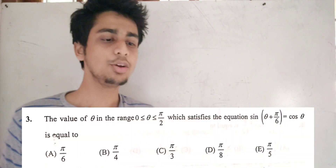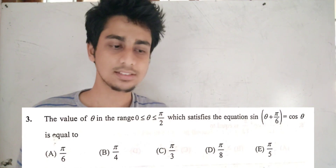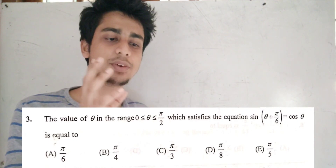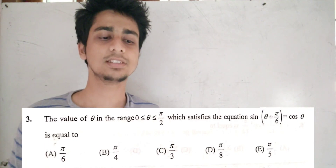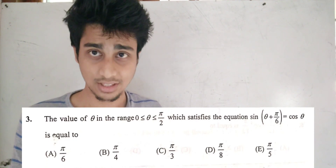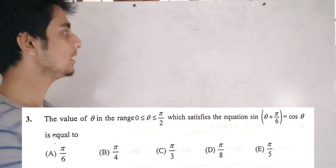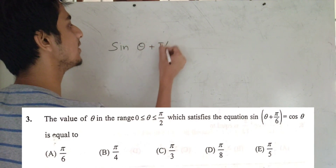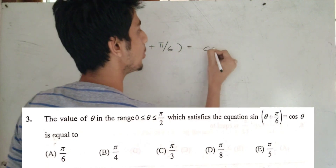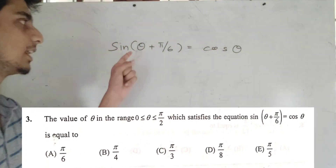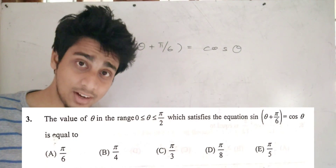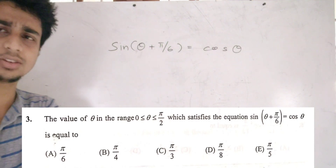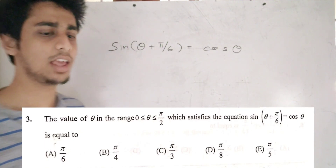The value of theta in the range 0 ≤ θ ≤ π/2 which satisfies the equation sin(θ + π/6) = cos θ is equal to what? Let's find the answer.